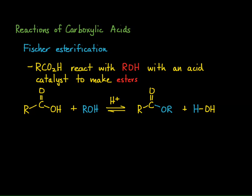This is an equilibrium process, so depending on the reaction conditions you can actually reverse the reaction. These are typically done with an excess of one of the reactants. For example, we could use the alcohol as a solvent, creating a huge presence of alcohol, and essentially shift the equilibrium to the right to form our product. The reverse can also happen — if you add water to an ester you can get hydrolysis of that ester to form a carboxylic acid.